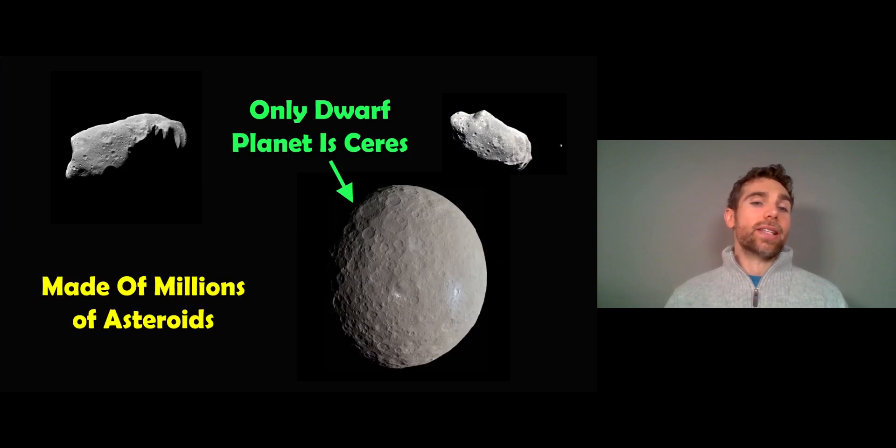Now the only dwarf planet in the asteroid belt is Ceres, and it's a dwarf planet because it's in hydrostatic equilibrium, which means that it's molded itself into a more spherical shape. If you get small enough or once you get to a certain size, gravitational forces will shape it more like a sphere. Below that they're not in hydrostatic equilibrium and you get a more potato-shaped structure like a more traditional asteroid. There are millions of asteroids in the asteroid belt that we know of actually. There could be many more, but Ceres is the only dwarf planet there.